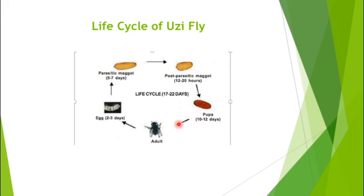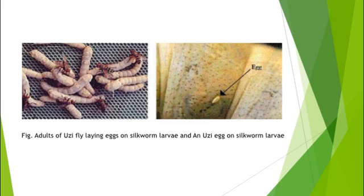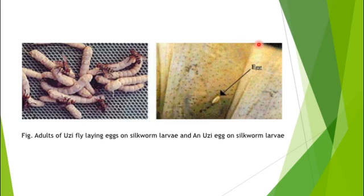The adult feeds on pollen, nectar, etc. Uzi fly lays 1 or 2 cream-colored eggs on the silkworm larvae. This picture shows the egg of Uzi fly laid on the body of the silkworm larvae. Generally, it prefers 4th or 5th instar larvae to lay eggs.